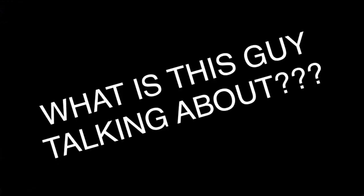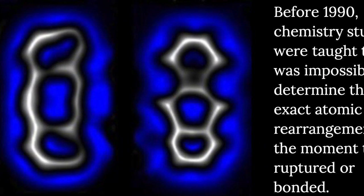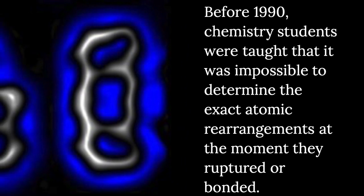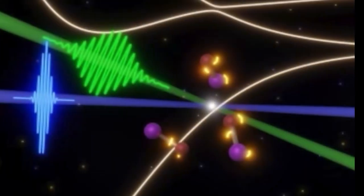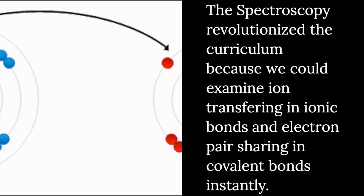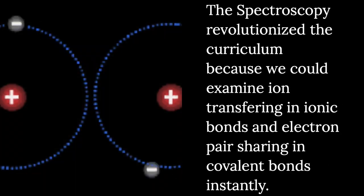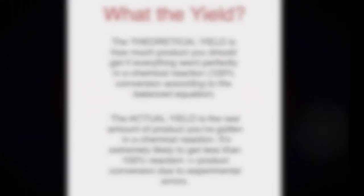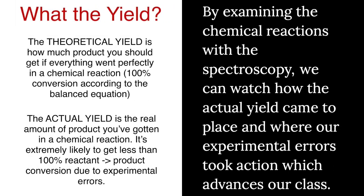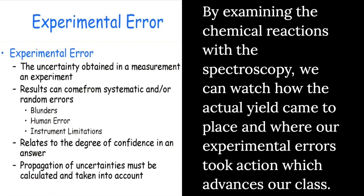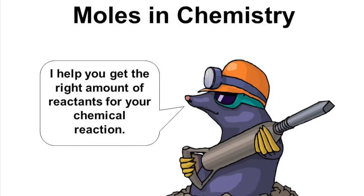Now, how does any of this relate to the course? Before the year 1990, chemistry students were taught that it was impossible to determine the exact atomic rearrangements at the moment they were either ruptured or bonded. The spectroscopy revolutionized the curriculum because we could examine ion transferring in ionic bonds and electron pair sharing in covalent bonds instantly. Also, by examining the chemical reactions with the spectroscopy, we can watch how the actual yield came into place and where our experimental layers took action, which relates to our class as we have been accounting for the yield of reactions that occur in stoichiometric problems.